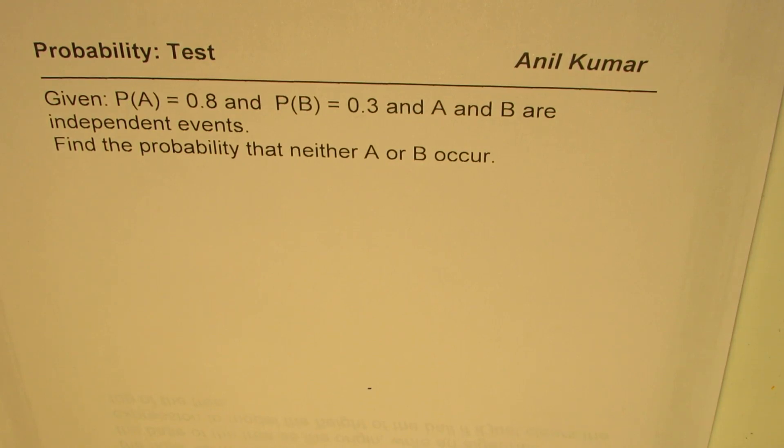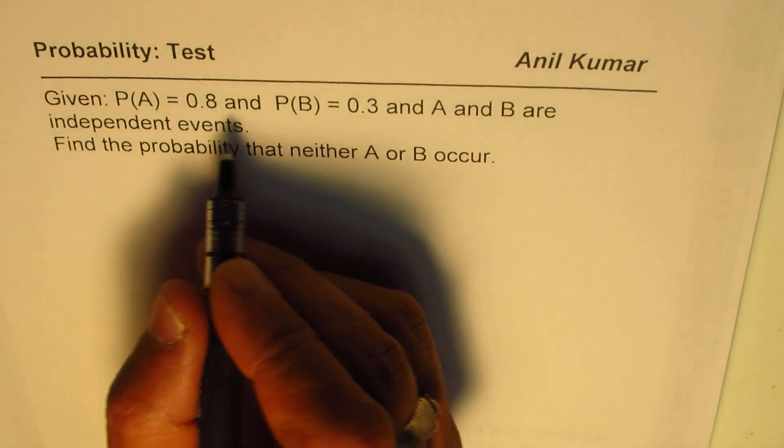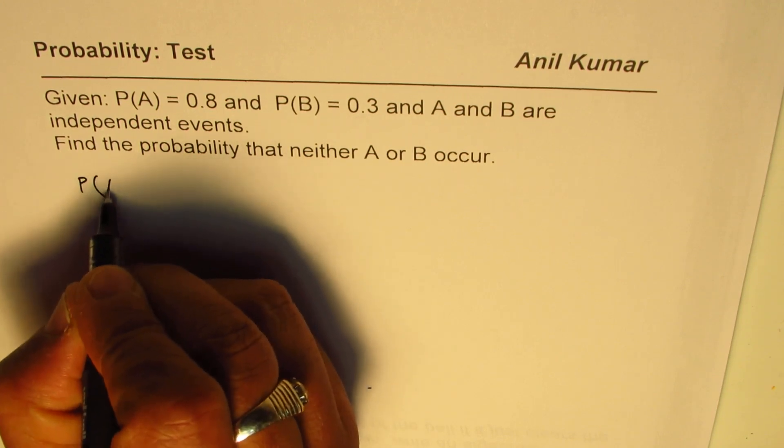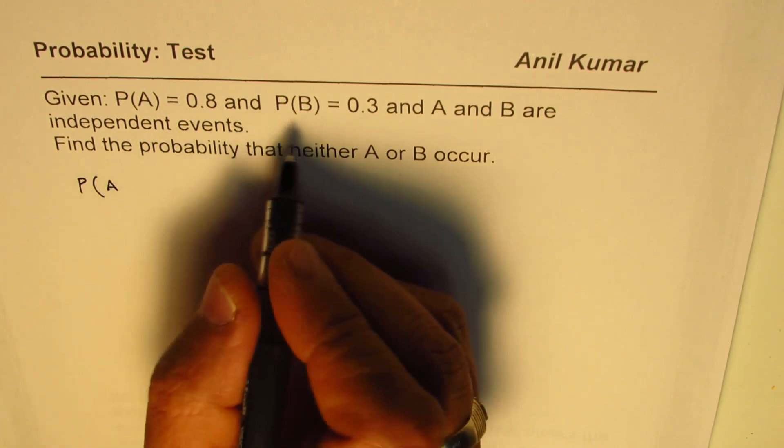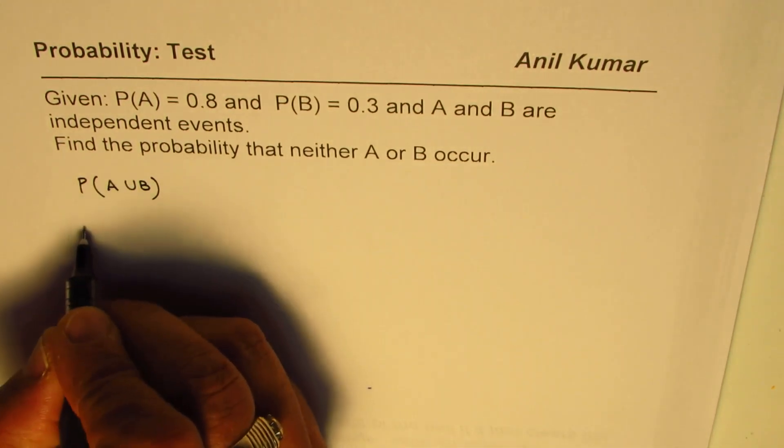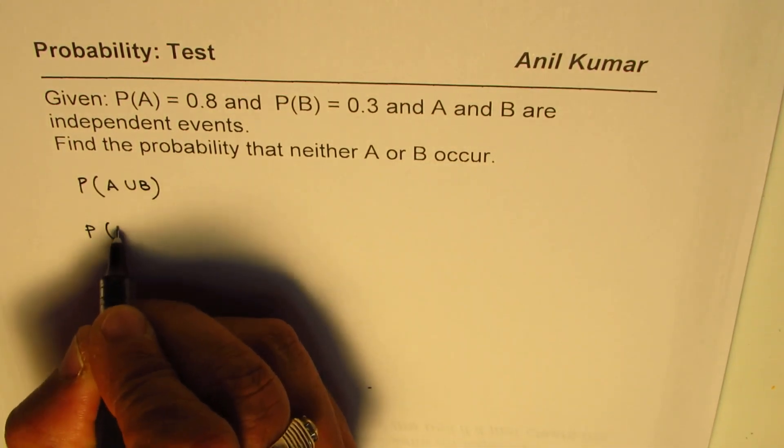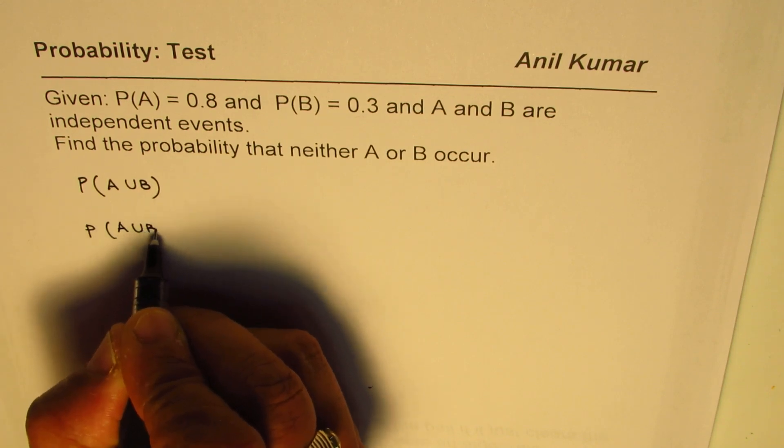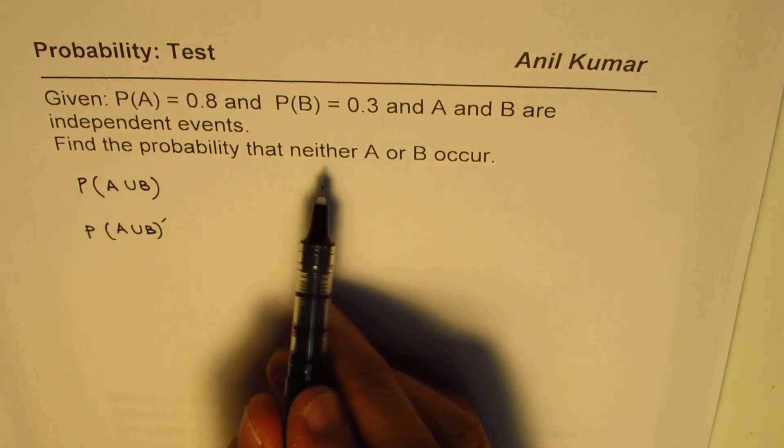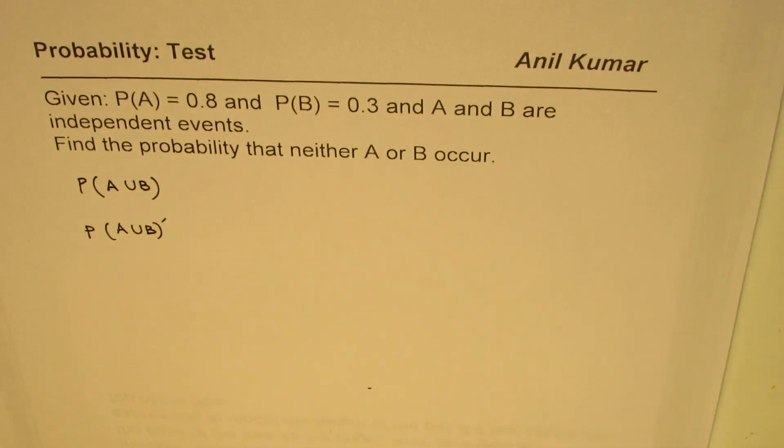We need to find the probability that neither A nor B occurs. In such cases, what we can find is probability when A or B occurs. That is the first step we could do and then we can find the complement of this. That will give us the answer, probability that neither A or B occurs. So that is the strategy for us.